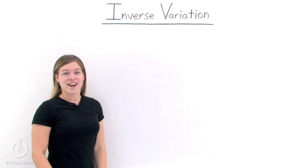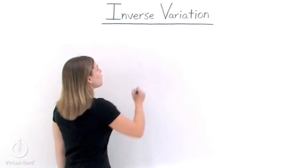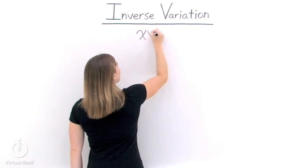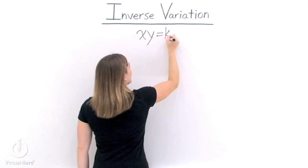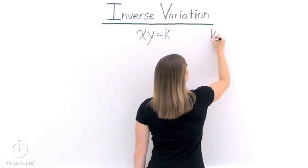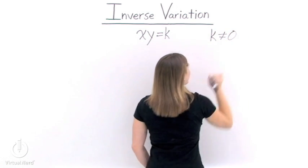What is the formula for inverse variation? Well, the formula for inverse variation is x times y equals k, where x and y are any two variables, and k does not equal 0.